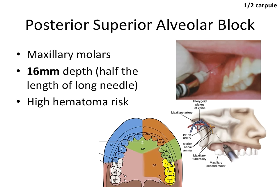Something important about the PSA block: it affects the maxillary molars, but there's a 25% chance it covers all three molars completely. 75% of the time, it leaves out the mesiobuccal cusp of the first maxillary molar, which can be supplied by the middle superior alveolar nerve, or MSA. So for the first maxillary molar, you often need the PSA block plus something additional — though there's a way to get around that entirely.